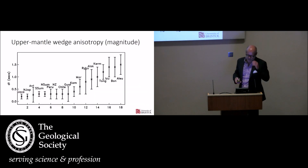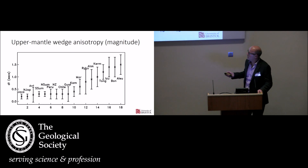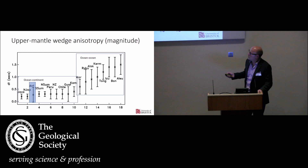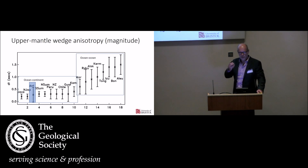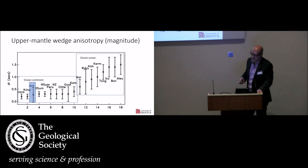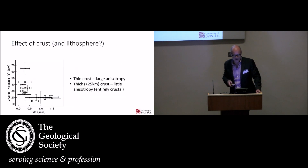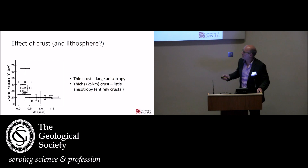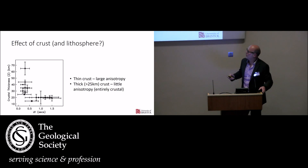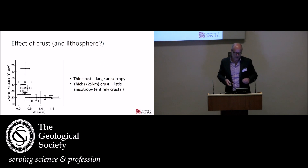Stepping back and looking simply at the magnitude of splitting in slab phases in the upper mantle wedge across different subduction zones: Java and North Japan show very small amounts, while Tonga and Izu-Bonin show very large amounts. The ones with very small amounts are ocean-continent collisions, and the larger ones are ocean-ocean. There is a very clear correlation with crustal thickness — when crust is thin we get large splitting, and as it gets thicker we get less. About 25 kilometers appears to be the magic transition number.